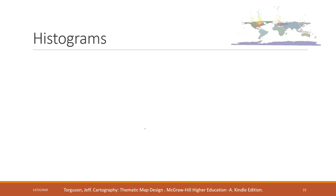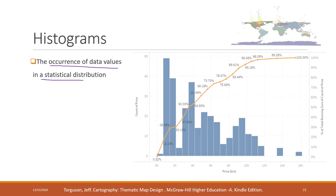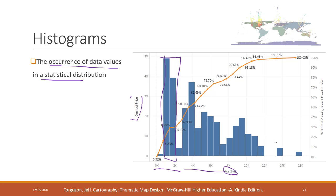Histograms, which we've learned from statistics, are used to show the accuracy of data values in a statistical distribution. This is an example of a histogram — we can see the number of records in different ranges, or different bins. It is used to show the distribution of a single variable. We can see there are many records in one range but very few in another.